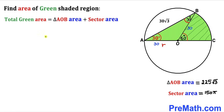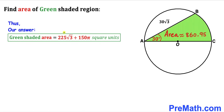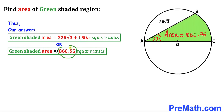For our final step, the total green area equals the area of triangle AOB plus the area of sector BOC. Substituting our values: green area equals 225 times square root of 3 plus 150 pi square units, which is approximately equal to 860.95 square units.